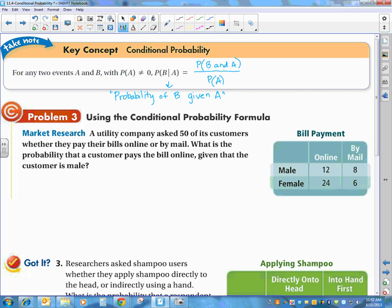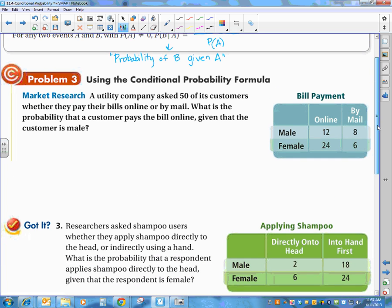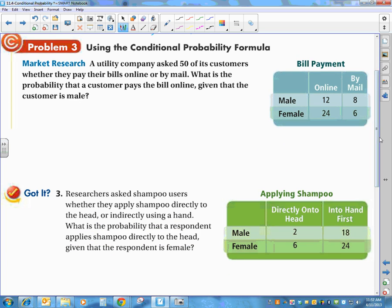We have some more charts and tables. We're going to actually use the formula because sometimes you aren't given the charts and formulas. So you do need to know how to do it otherwise. So we're going to go practice, and you can easily check as we go along because you can see it from the chart. A utility company asked 50 of its customers whether they pay their bills online or by mail.